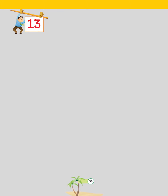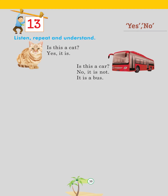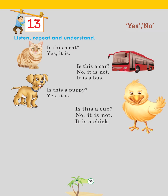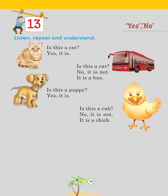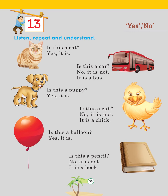Chapter 13: Yes / No. Listen, repeat and understand: Is this a cat? Yes, it is. Is this a car? No, it is not — it is a bus. Is this a puppy? Yes, it is. Is this a cub? No, it is not — it is a chick. Is this a balloon? Yes, it is. Is this a pencil? No, it is not — it is a book.